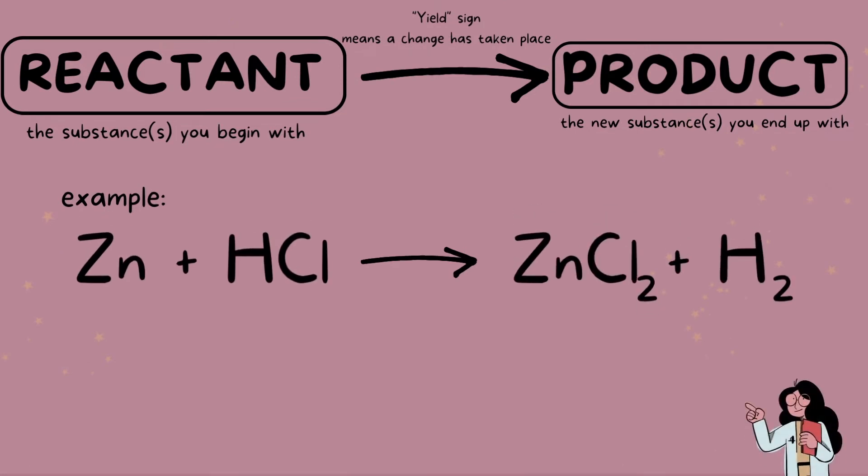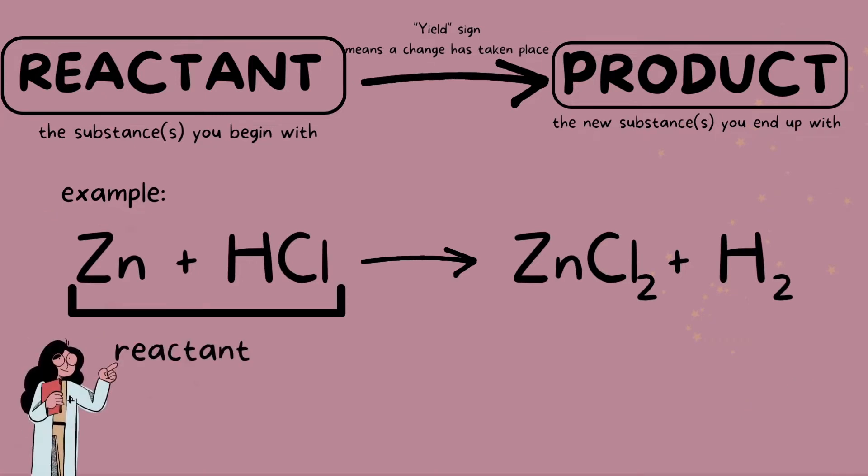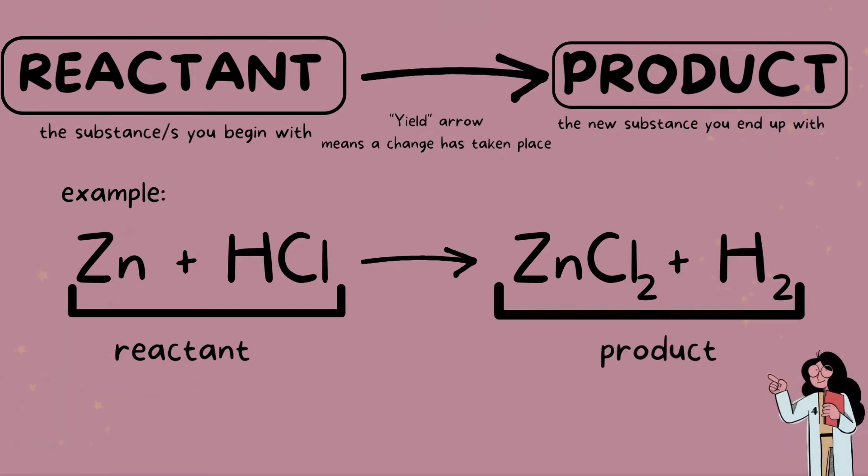Let's work out a few examples. So keep in mind that balancing chemical equations is a trial-and-error process and it's going to require a bit of patience. But the more you practice, the quicker you will become and the better you will become at it. Starting here with zinc and hydrochloric acid on our reactant side, this yields zinc chloride and hydrogen on the product side.